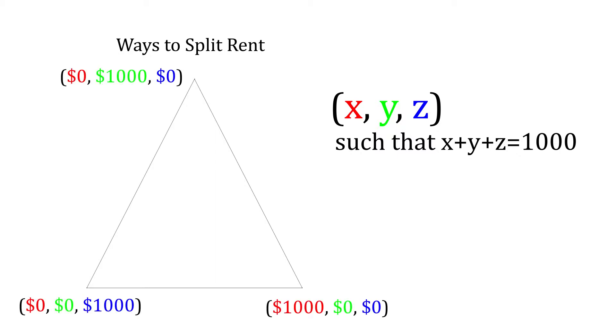So, at the main vertices, two rooms are free. In the center, the rent is evenly divided. Each possible division of rent is represented by a single point in the triangle.